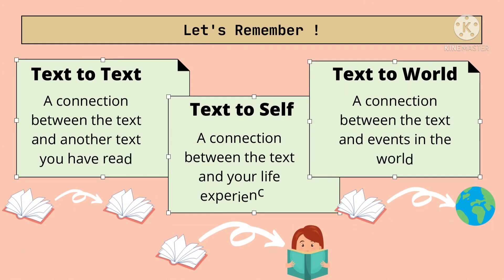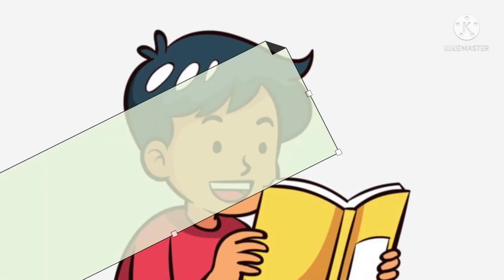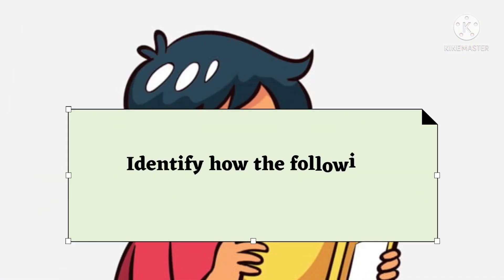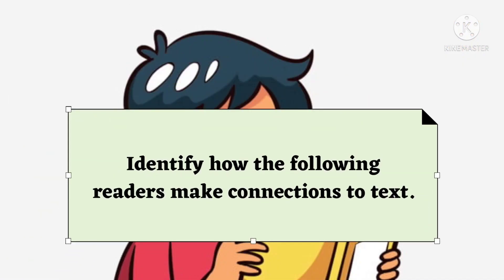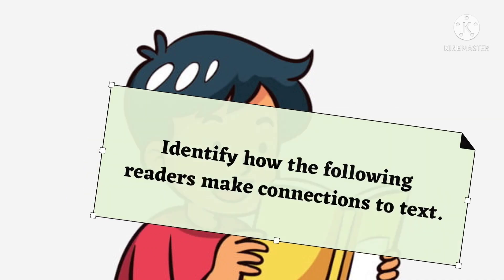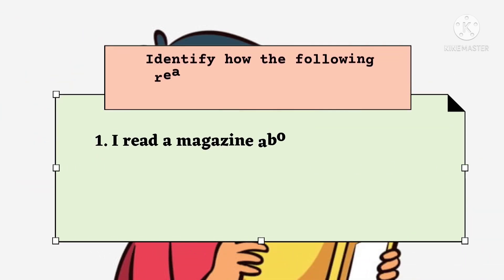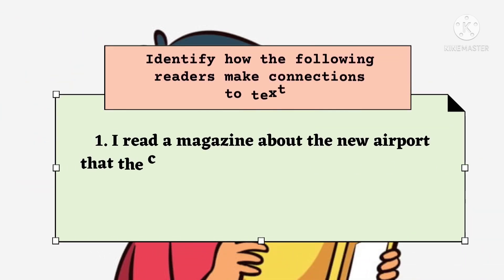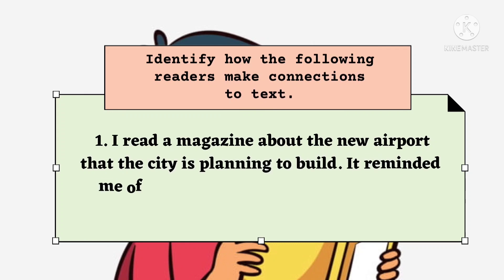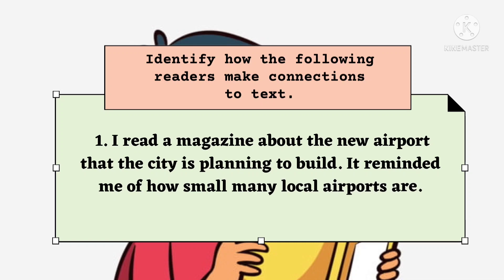To sum up the lesson, here are the three kinds of making connection. Now, get your pen and paper ready — we'll have a short quiz. Identify how the following readers make connection to this text. Number 1: I read a magazine about the new airport that the city is planning to build. It reminded me of how small many local airports are.